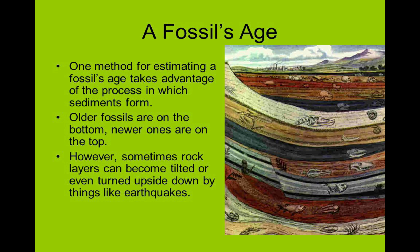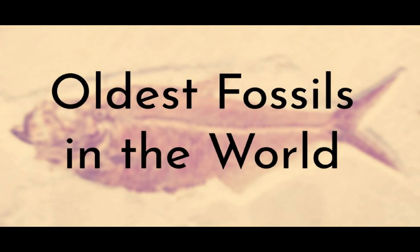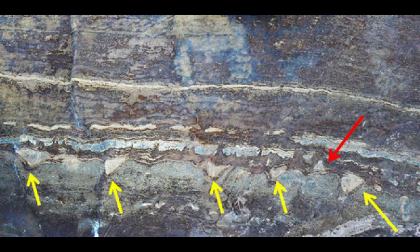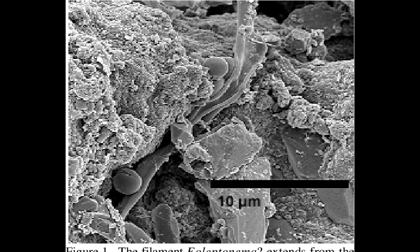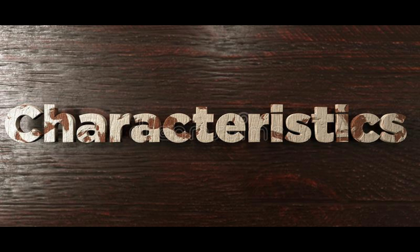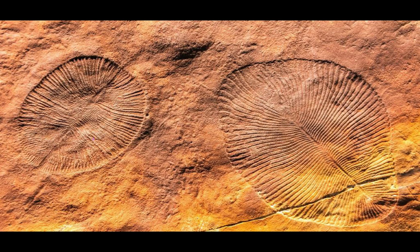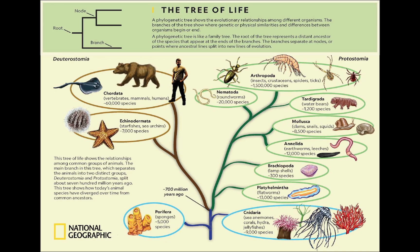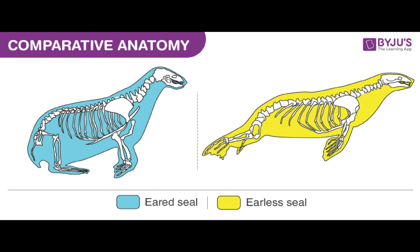The oldest fossils found so far are determined to be about 3.5 billion years old. These rocks contain microfossils that resemble bacteria that still exist today. In addition to determining the age of a fossil, scientists also determine the characteristics of the organism from its fossil. This knowledge of characteristics allows us to see relationships among different organisms, usually represented in a phylogenetic tree as evidence for evolution.